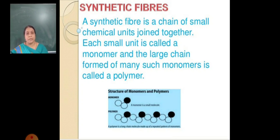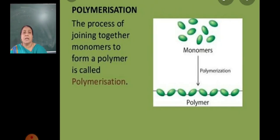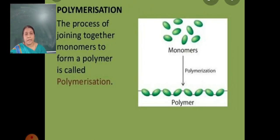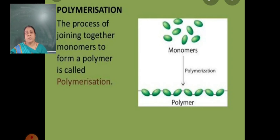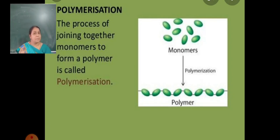The large chain is called a polymer. The process by which monomers join together to form a polymer is called the polymerization process. When two or more monomers join to make a long chain of polymer, that process is called polymerization.